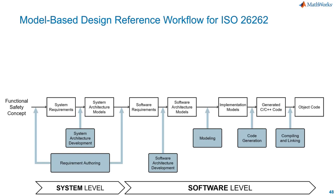This is the forward path of how we develop our systems using Model-Based Design. We always start from requirements. In the context of ISO 26262, the high-level requirement is called a functional safety concept. It defines the safety goals and the ASIL level. We need to perform the HARA — the hazard analysis — to get this functional safety concept. So it's called a concept, but it's kind of the requirement.